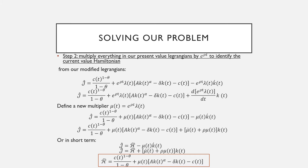Now we have this j-hat here, which is just going to be our regular Lagrangian times e raised to the power of ρt. So here we have our direct instantaneous utility functions plus our new multipliers. And for this term at the end, this is the only novel part, in that we're going to have to take the derivative with respect to this whole new multiplier, being μ(t), which is going to be equal to e raised to the power of ρt times λ(t).